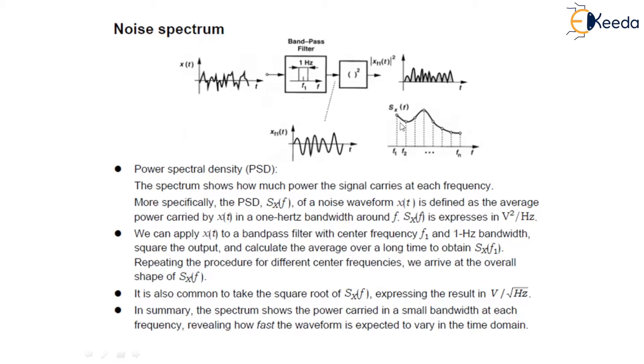It is also common to take the square root of SX(F), expressing the result in volt per root hertz. The spectrum shows the power carried in a small bandwidth at each frequency, revealing how fast the waveform is expected to vary in the time domain.